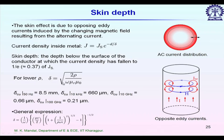At millimeter wave frequencies, current is mostly a surface current component flowing through a very thin layer of metal on the surface. Since only a thin layer is utilized, surface resistance is very high at millimeter wave frequencies — the metal becomes very lossy. At optical wavelengths the frequency is so high we cannot use metal at all, which is why optical fiber always uses dielectric material.